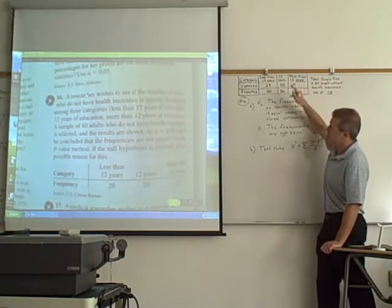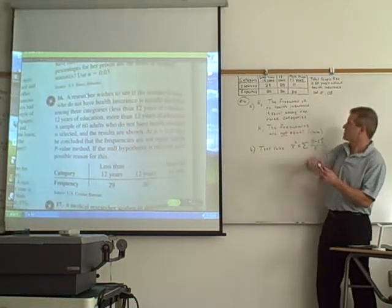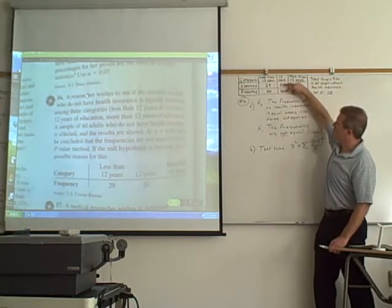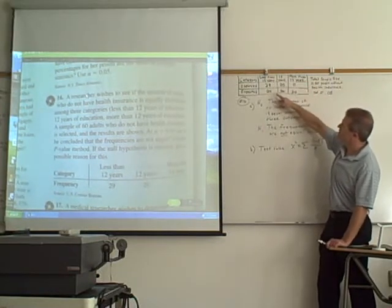Now observe that it's given in the problem where 29, 20, and 11. So obviously those are different. But are these numbers far enough apart that we can say, are 29 and 20 and 11 far enough off 20, 20, and 20